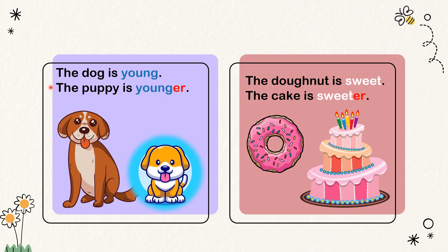Look at this example, children. The dog is young, and the puppy is younger than the dog. In the next picture, the donut is sweet, but this cake is sweeter than the donut.